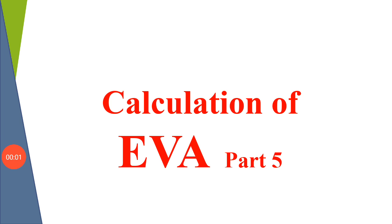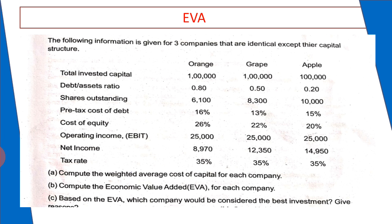Dear students, we have been discussing different problems on calculation of EVA. Today we are discussing one more problem. The following information is given for three companies which are identical except their capital structure. They are similar in many aspects because total capital invested is one lakh, and debt-equity ratio will be different.